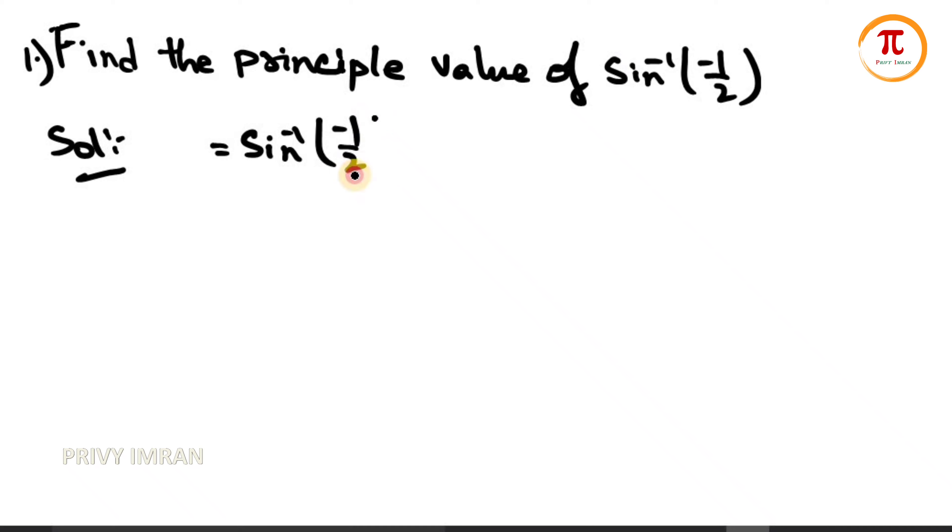Here, sin⁻¹(-θ) can be written as -sin⁻¹(θ), where θ = 1/2. Now it can be written as -sin⁻¹(1/2). We already know...